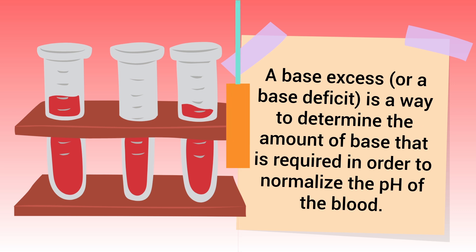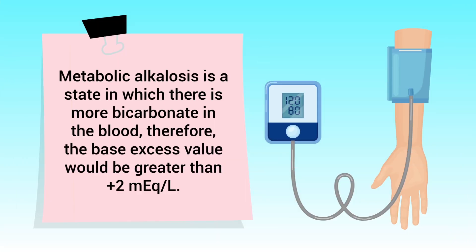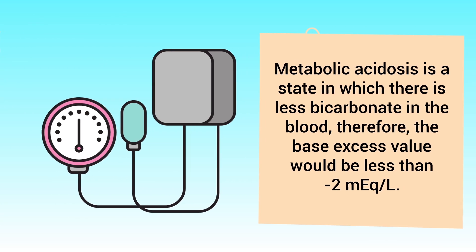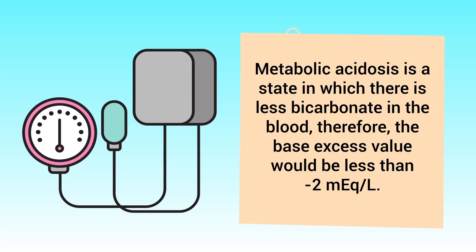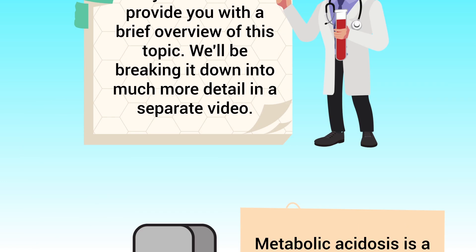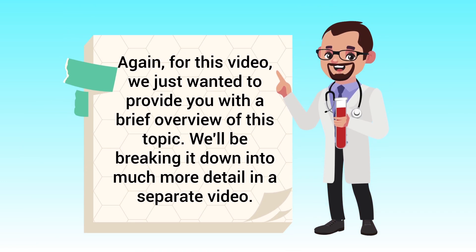To give a few examples: metabolic alkalosis is a state in which there is more bicarbonate in the blood, therefore the base excess value would be greater than 2. Metabolic acidosis, on the other hand, is a state in which there is less bicarbonate in the blood, therefore the base excess value would be less than 2.